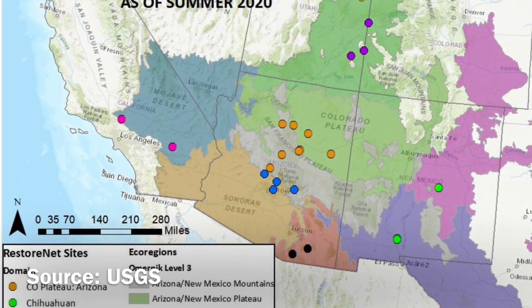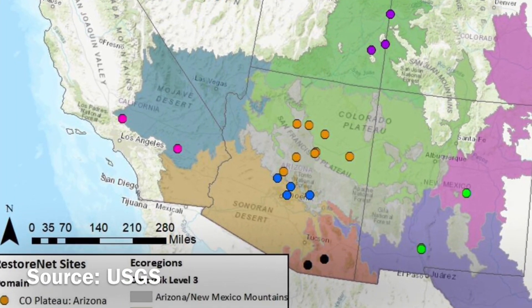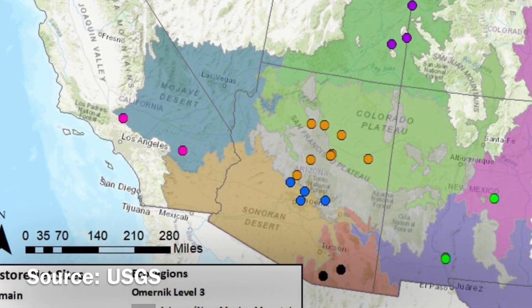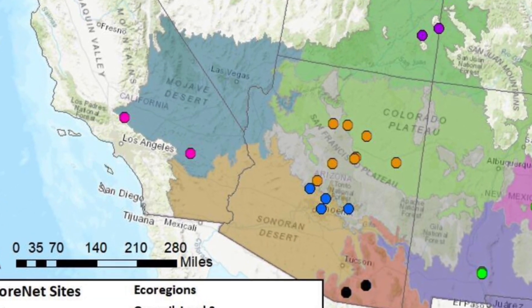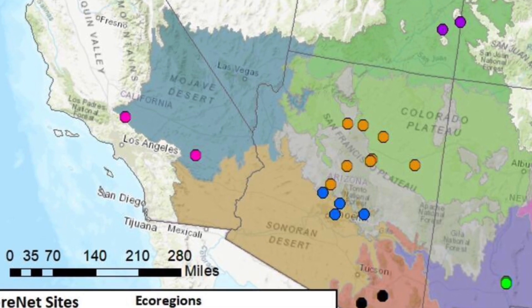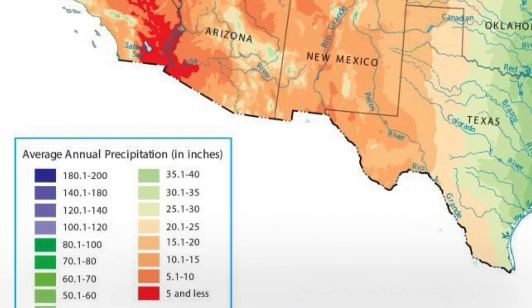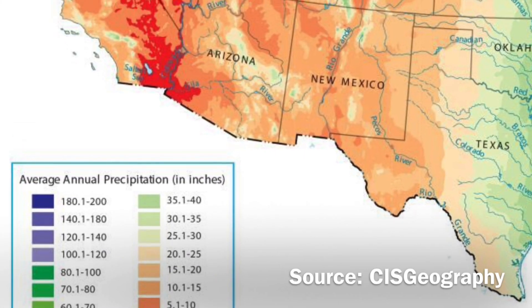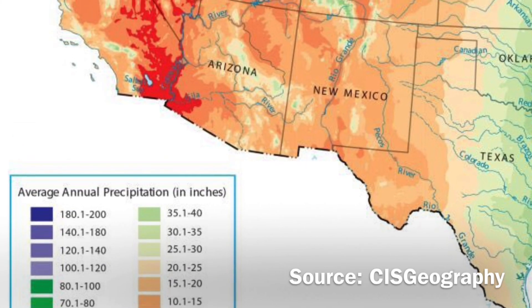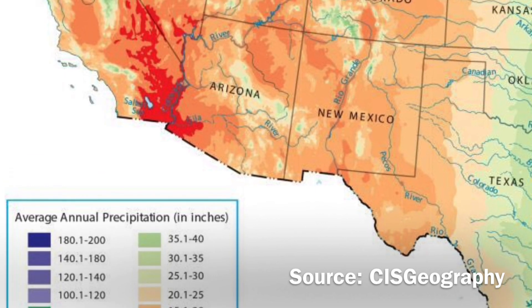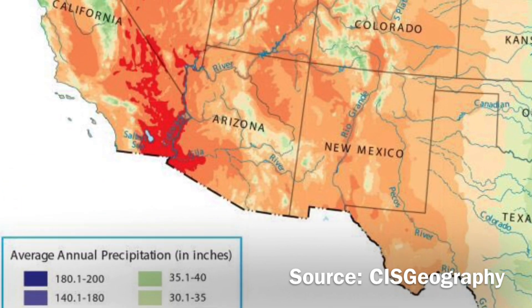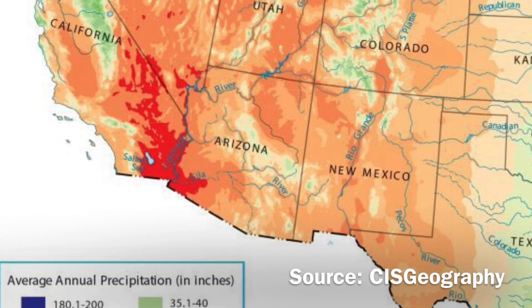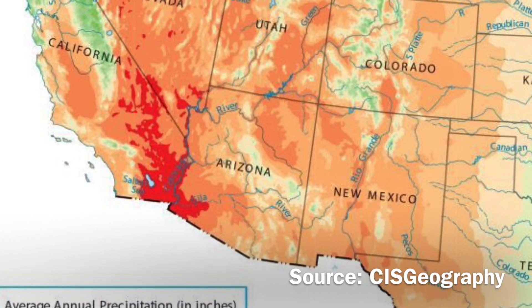Right here we have the border between the two. As you can see, the Mojave cuts across quite a large swath of territory, taking up four states, and the Sonoran is mostly found in California and Arizona. The distinguishing factor between the two is rainfall, with the Sonoran receiving slightly more because it has a heavier summer wet season, whereas the Mojave receives most of its rainfall during the winter.